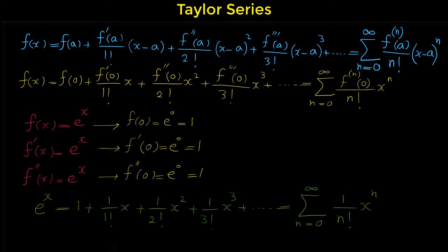So the Maclaurin series of e to the x is 1 plus 1 over 1 factorial times x, plus 1 over 2 factorial times x squared, plus 1 over 3 factorial times x cubed, and so on.